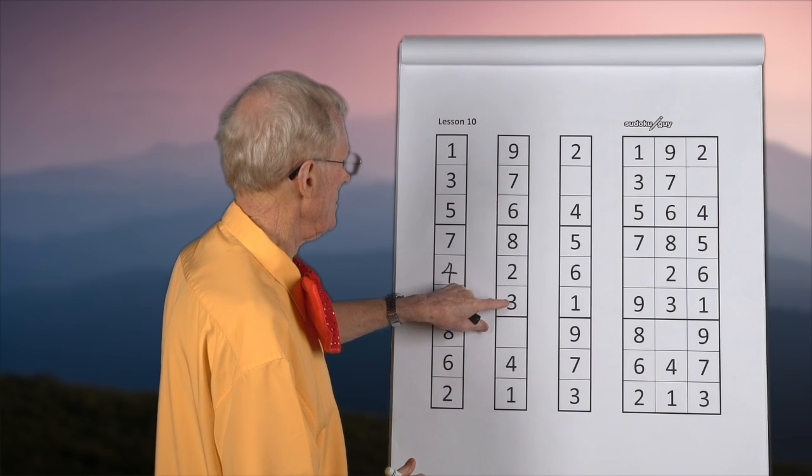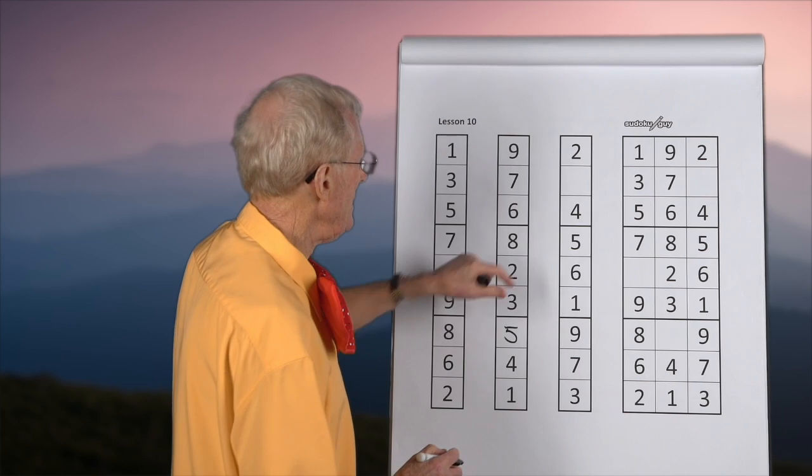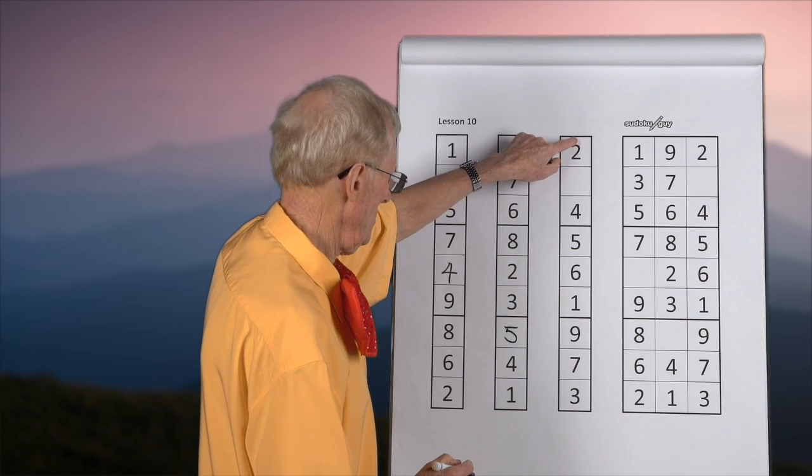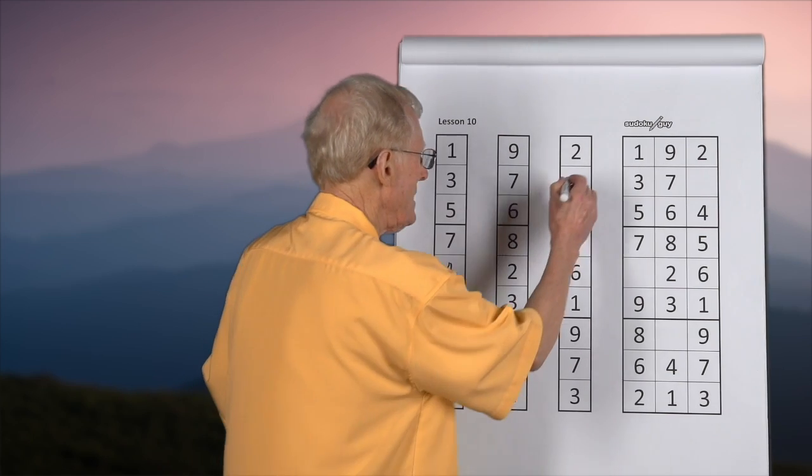Here we go, one, two, three, four, it's a five missing there. And here we go, one, two, three, four, five, six, seven, eight is missing there.